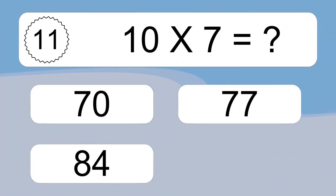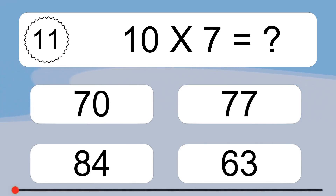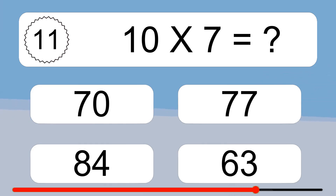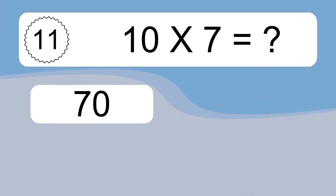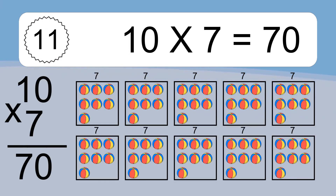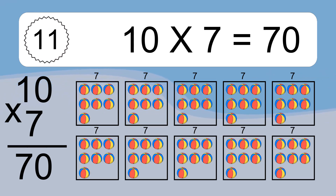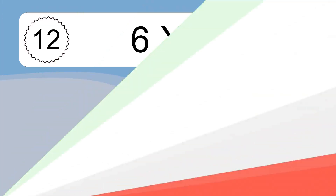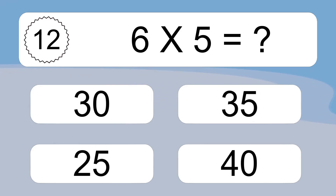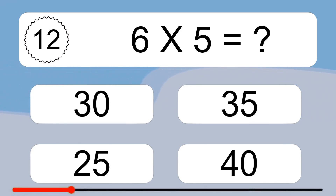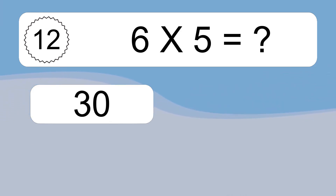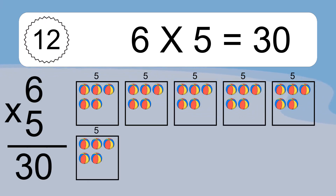10 times 7 equals what? 10 times 7 equals 70. We have 10 boxes, and each box has 7 colorful balls inside. If you count all the balls in all the boxes together, you will have 10 times 7 balls. This equals 70 balls.